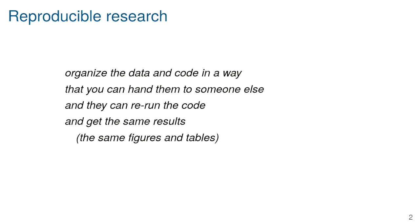Reproducible research means we organize the data and code in a way that you can hand it to someone else, they can rerun the code and get the same results — the same figures and tables. That sounds simple, but it can be difficult. It requires us, day by day in a project, to maintain focus on keeping things organized and well-documented so that someone can rerun our code easily.